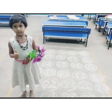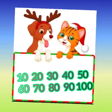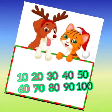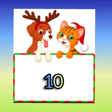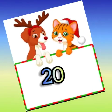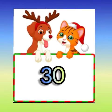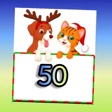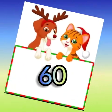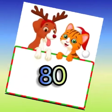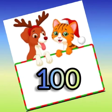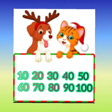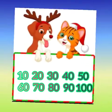Right children, come on. Let us learn skip counting by 10. See here, here are the numbers from 10 to 100. Let us learn. Come on children: 10, 20, 30, 40, 50, 60, 70, 80, 90 and 100. Very good children. This is called skip counting by 10.